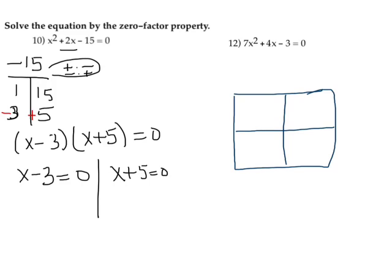If x minus 3 equals zero, then obviously x will equal 3. And if x plus 5 equals zero, then x should equal negative 5.